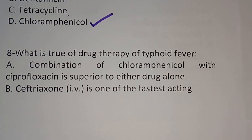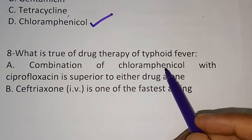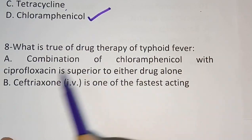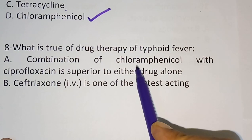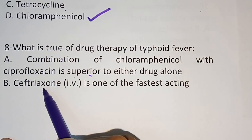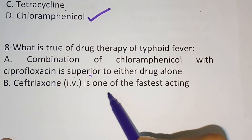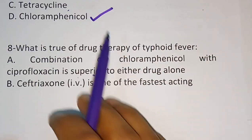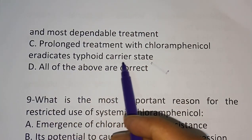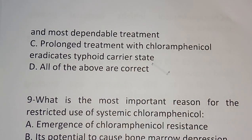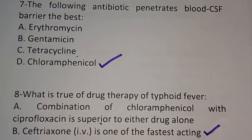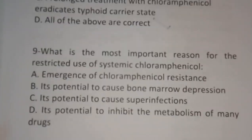Eighth question: what is true of drug therapy of typhoid fever? Option A: combination of chloramphenicol with ciprofloxacin is superior to either drug alone. Option B: ceftriaxone is one of the fastest-acting IV treatments. Option C: prolonged treatment with chloramphenicol eradicates the typhoid carrier stage. Option D: all of the above. The correct answer is option B — ceftriaxone IV is one of the fastest-acting and most dependable treatments for typhoid fever.